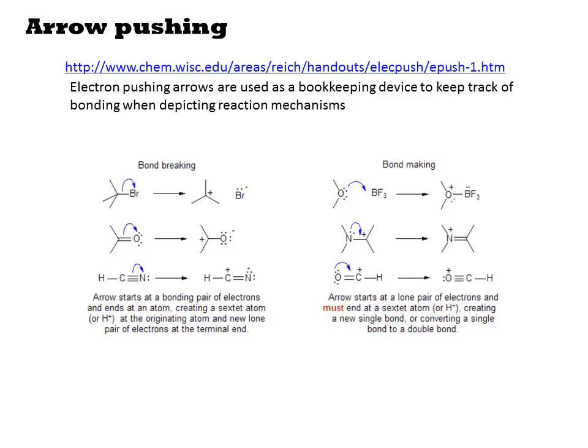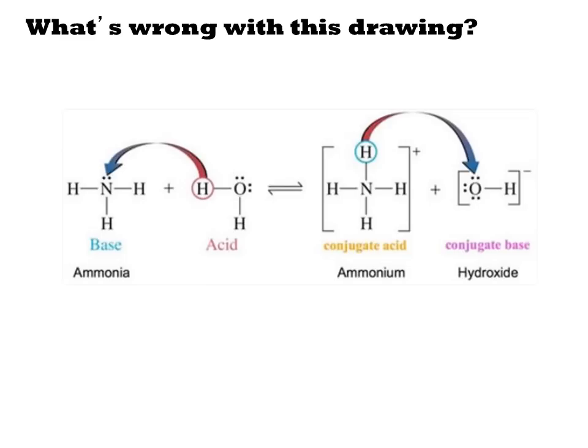Reaction mechanisms can be represented visually using arrow pushing. Bond-breaking arrows originate on a bond and point to the atom that will receive the pair of electrons. Bond-making arrows initiate on a lone pair of electrons on an atom and point to the atom they will become bonded to. Biochemists often use arrows in ways that don't actually mean arrow pushing, and it can be confusing. For example, when showing the movement of a proton from an acid to a base, the electrons on the base should be attacking the proton, and then the bond between the H and the O should be broken with the electrons returning to the oxygen. So be a little careful in reading the diagrams you see in figures.